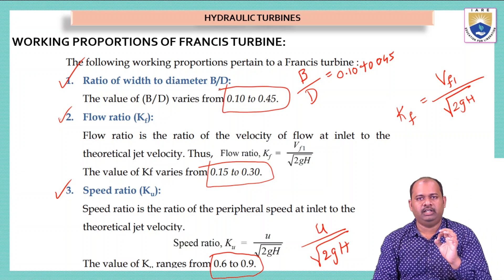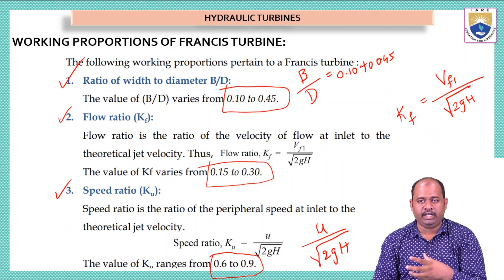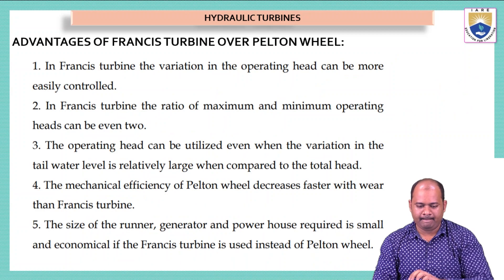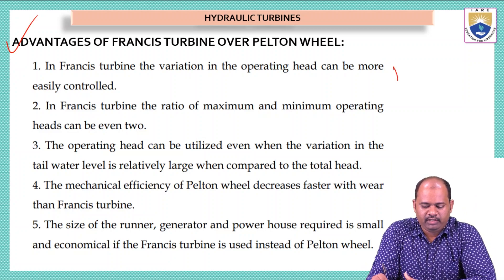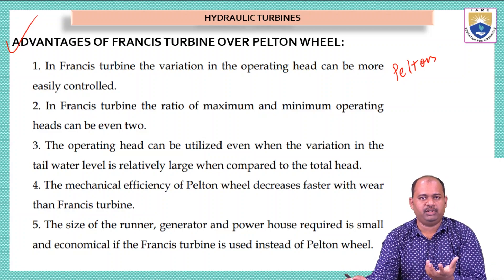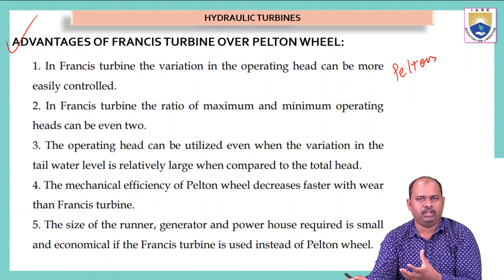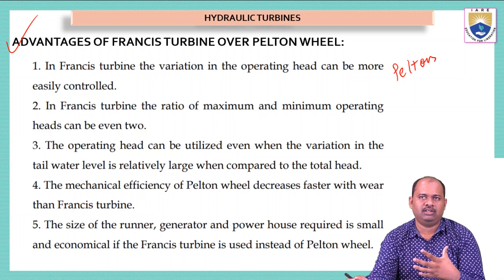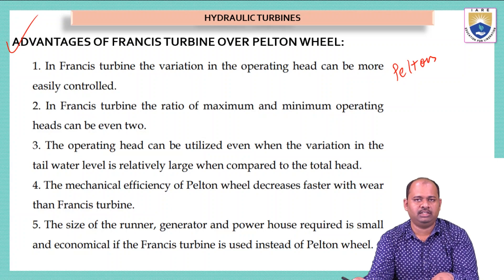Now we will see some advantages of the Francis turbine. In the previous lectures we saw the Pelton wheel, which is an open atmospheric turbine where the pressure inside equals atmospheric pressure. In a reaction turbine the pressure inside the turbine is very low compared to outside. We need this condition for specific operational advantages.